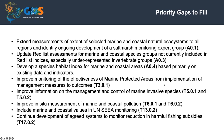The priority gaps that really need to be filled to support indicator development are: extending measurements of the extent of selected marine and coastal natural ecosystems for goal A0.1; updating the IUCN red list assessments for marine and coastal species, especially for underrepresented invertebrate groups; developing a species habitat index for marine and coastal areas; improving monitoring of the effectiveness of marine protected areas; improving information on the management and control of marine invasive species; improving in situ measurement of marine and coastal pollution — this is very poor, with very few nations reporting on the Stockholm Convention, for example; including marine and coastal values in the UN System of Environmental-Economic Accounting monitoring; and continued development of an agreed system to monitor reduction of harm from fish subsidies.